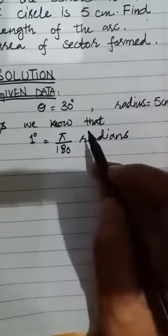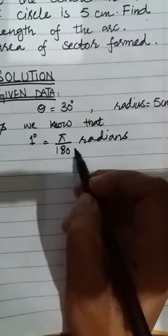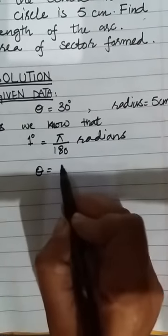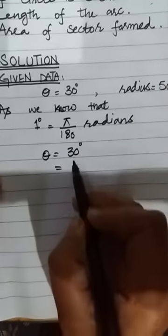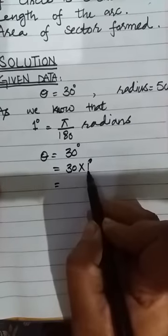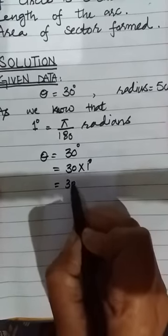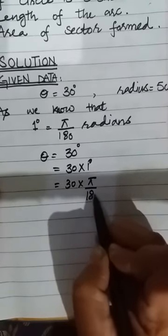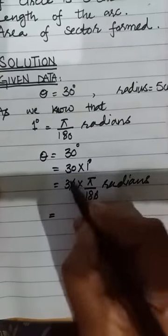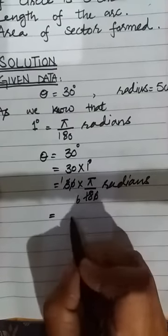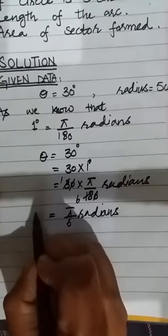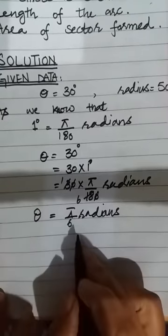As we know, 1 degree equals pi by 180 radians. So with the help of this conversion, 30 degrees equals 30 into pi by 180. The zeros cancel out, and we get pi by 6 radians. So now we have theta in radians.